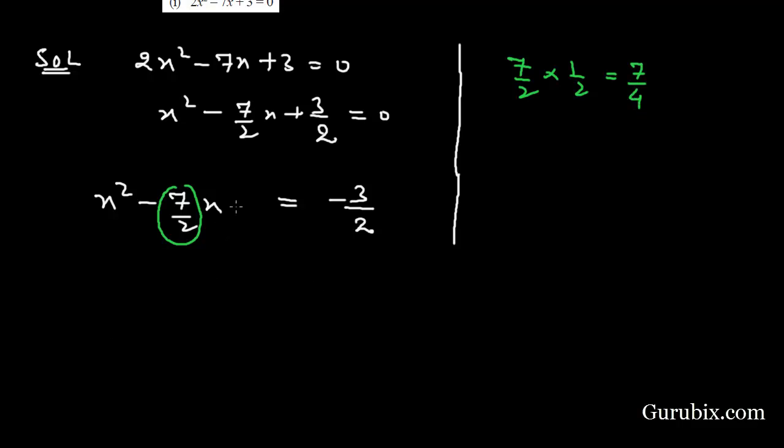We shall add the square of 7/4 in both the sides. Now we shall add the square of the half of this term like this: (x - 7/4)².